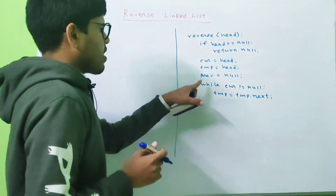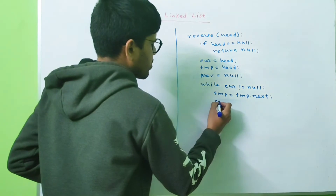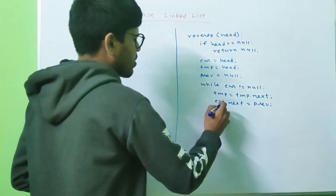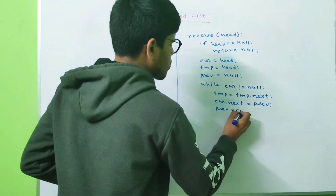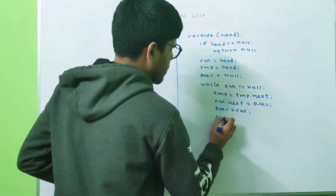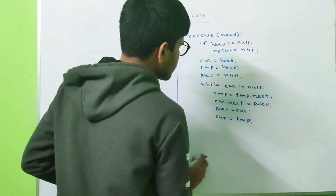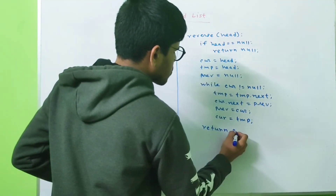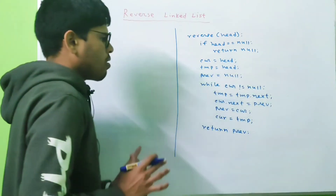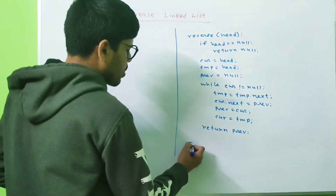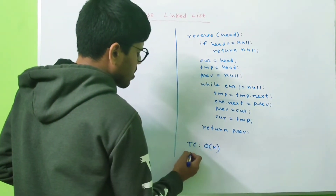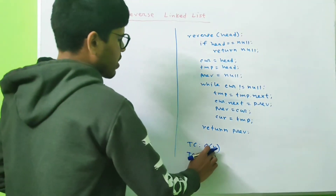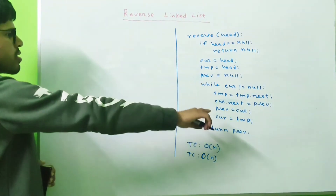Inside the loop, we connect current.next to prev. Then we move prev to current and current to temp. At the end we return prev, because prev will point to the head of the reversed linked list. This algorithm takes O(n) time complexity and O(n) space complexity for the recursion call stack, where n is the number of nodes in the linked list. Let's see how this algorithm works.